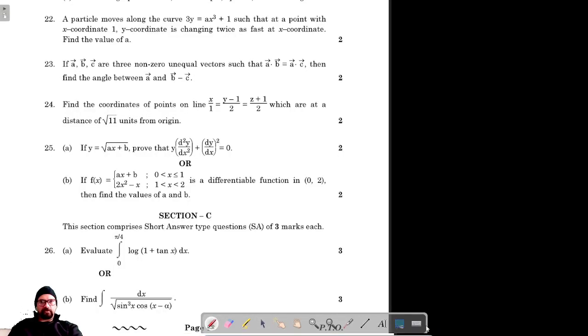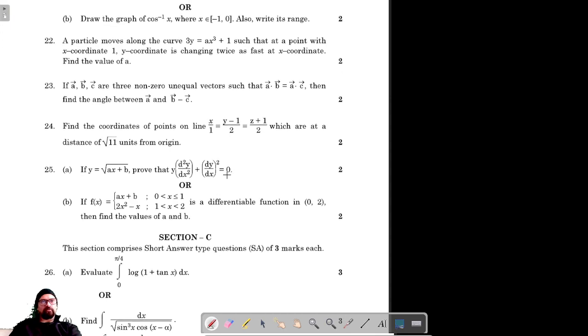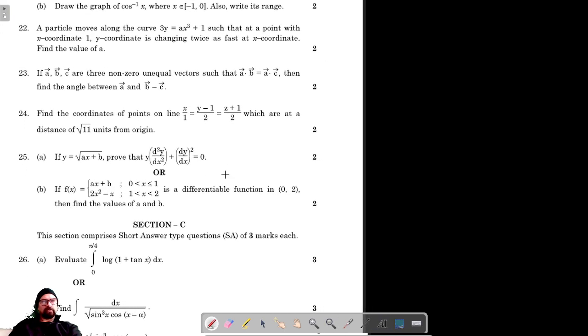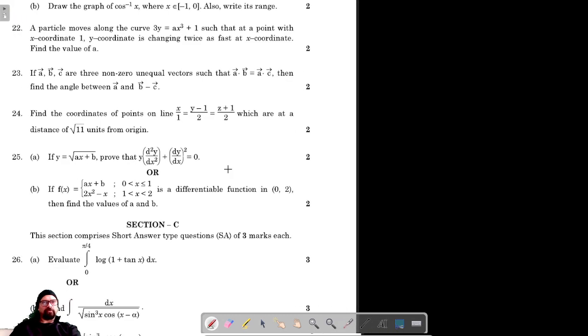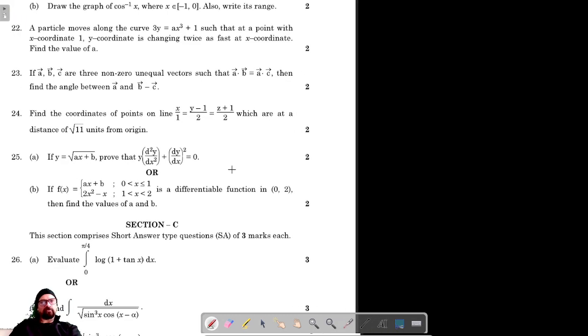Okay, for question number 22, a particle moves along the curve 3y equals ax³ plus 1, such that at a point with x-coordinate, the y-coordinate is changing twice as fast as the x-coordinate.